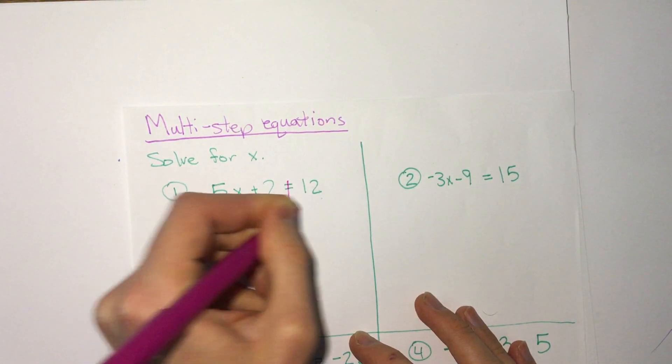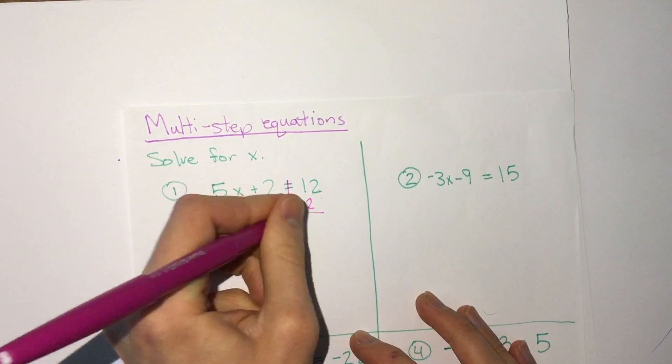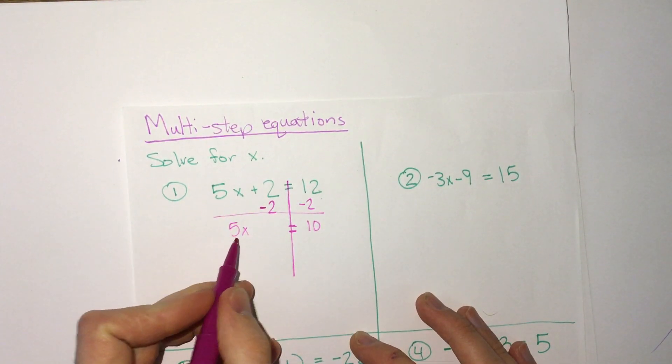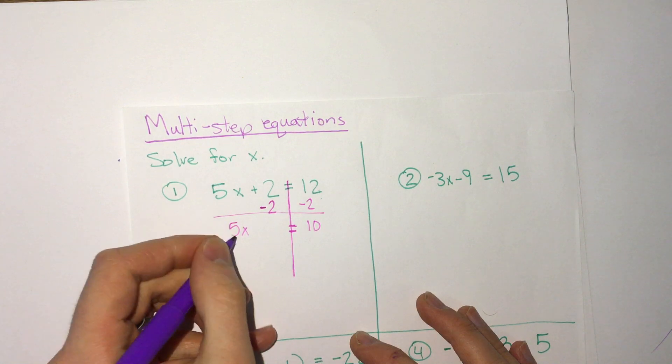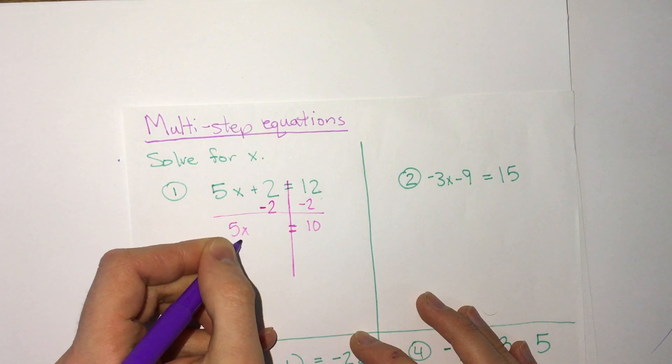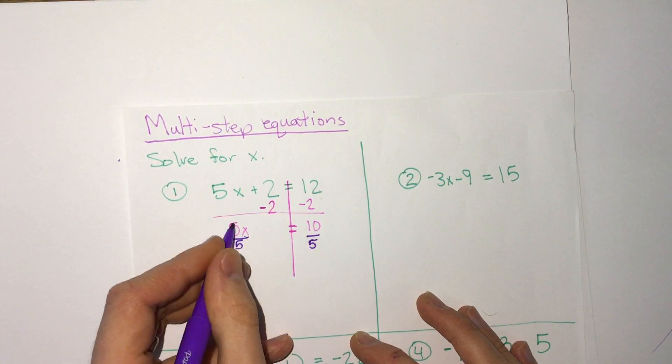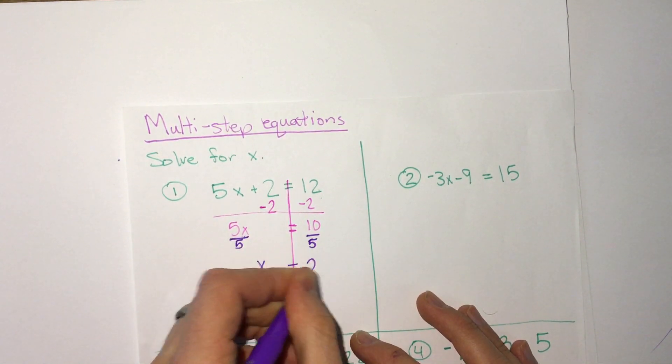Plus 2, we would subtract 2, and we'd get 5x, this becomes 0, equals 10. Now we don't have any more addition and subtraction, I'm going to change colors here, but we do have multiplication, 5 times x, so we're going to move that over by dividing by 5, and 5 divided by 5 is 1, so we get x equals 2.